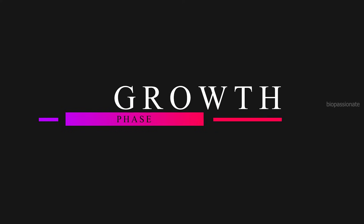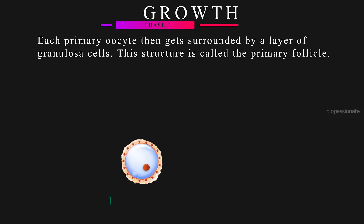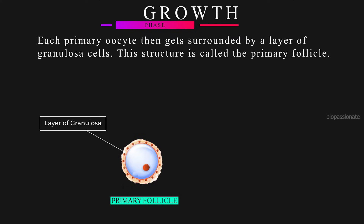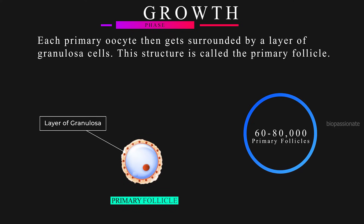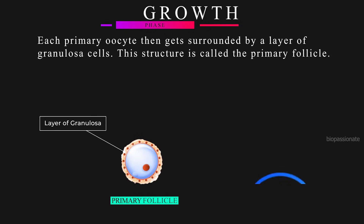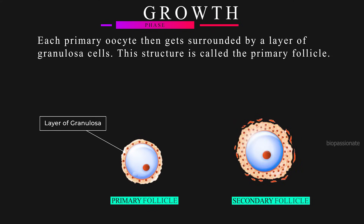During the growth phase, each primary oocyte gets surrounded by a layer of granulosa cells — this structure is called the primary follicle. At the time of puberty, only 60,000 to 80,000 primary follicles are left in each ovary, because a large number of follicles degenerate from birth to puberty. The primary follicles then get surrounded by more layers of granulosa cells and a new theca, forming secondary follicles.